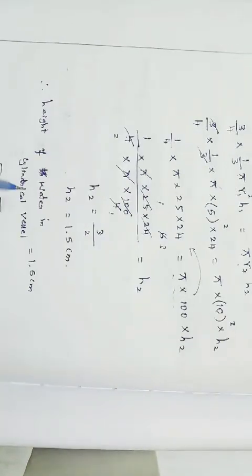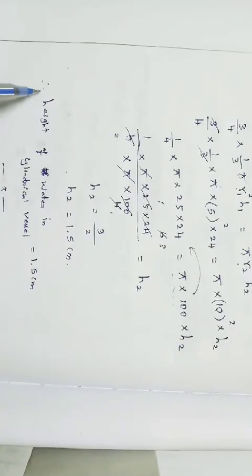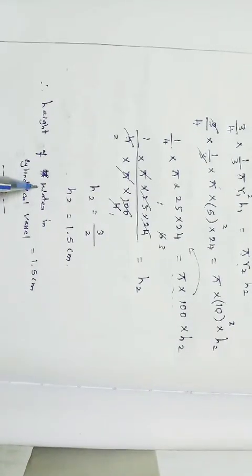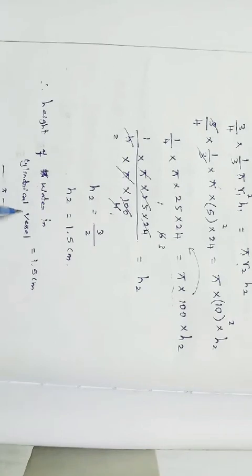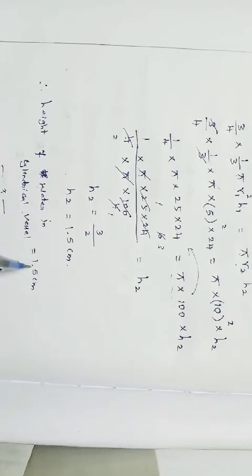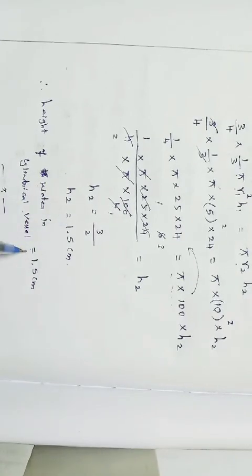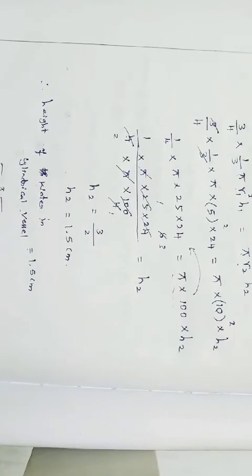Therefore, the height of water in the cylindrical vessel is equal to 1.5 centimeter.